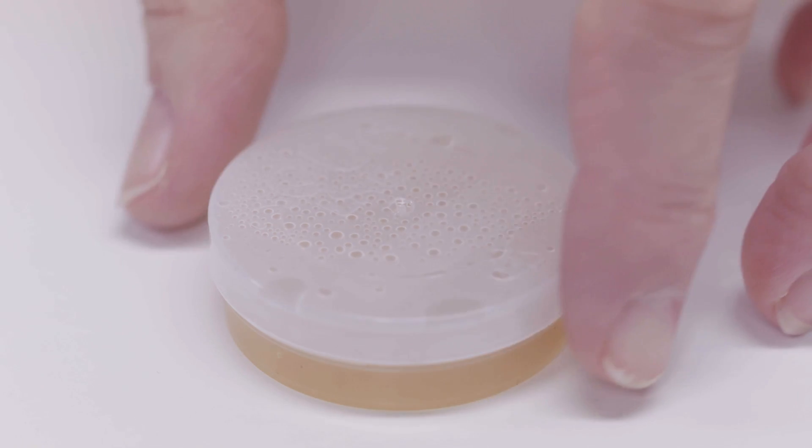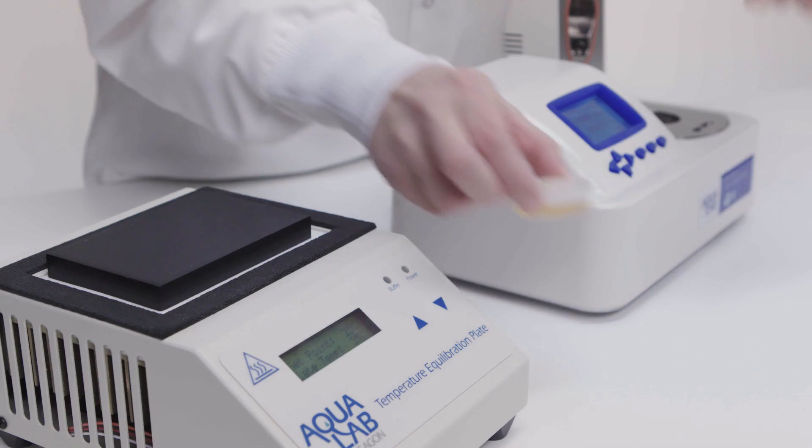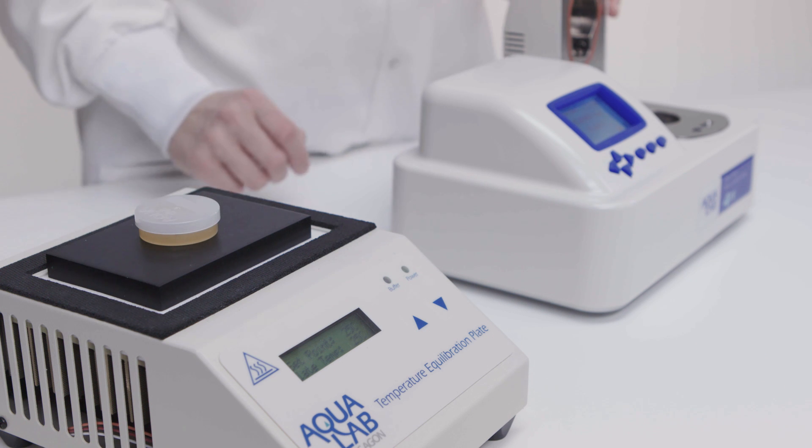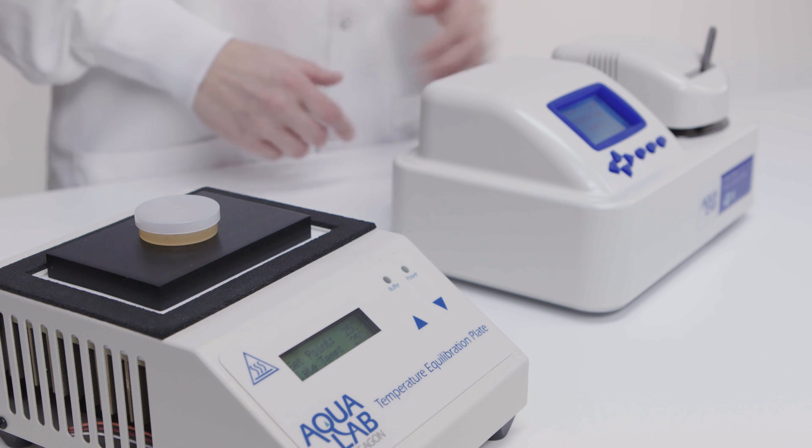One way to reduce read times is by bringing the sample to temperature before putting it in the instrument. If the temperature differences are slowing down your read process, consider purchasing a temperature equilibration tray, which brings samples to a set temperature before you read them.